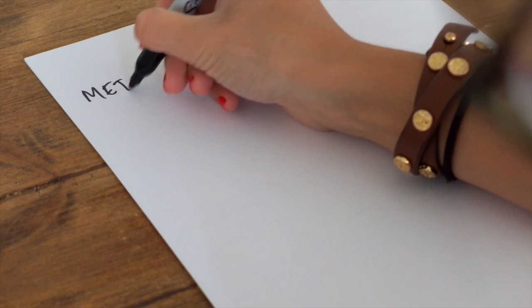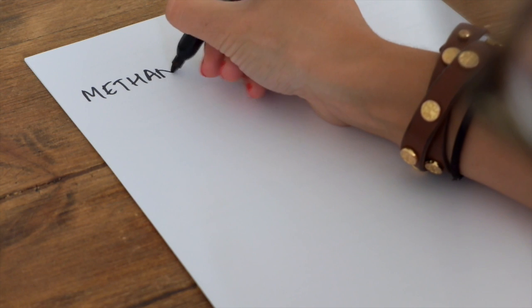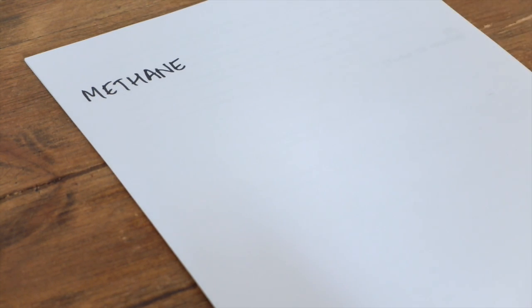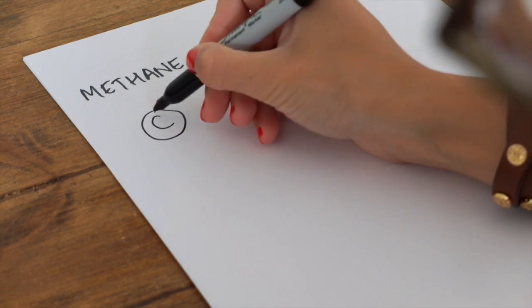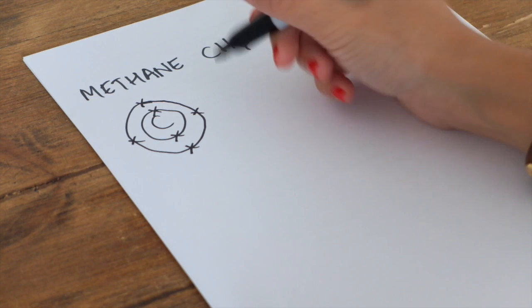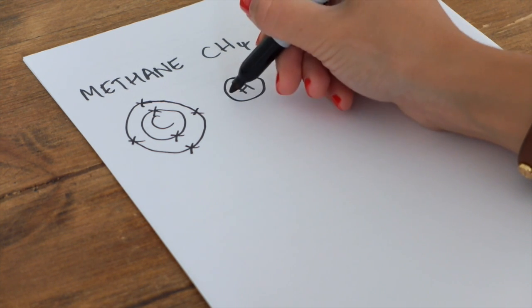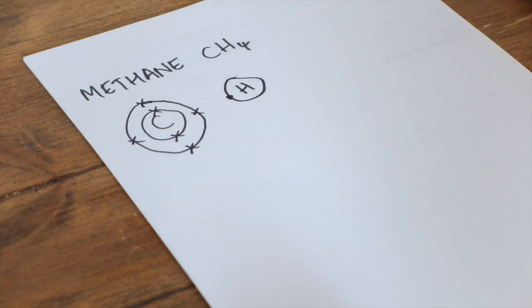I'm going to use methane this time. That's an alkane. Check out my alkane video if you're not quite sure about alkanes. Carbon has six electrons altogether. That looks like this. And hydrogen, nice and straightforward, it only has one.